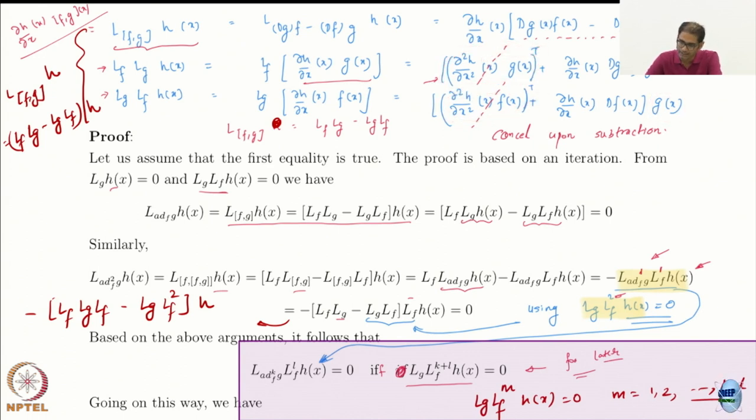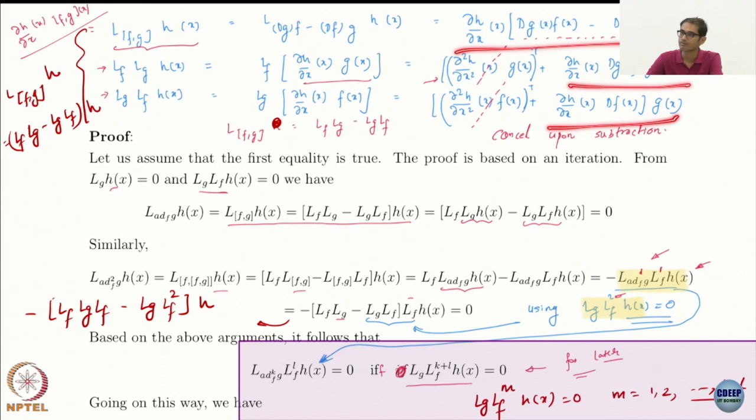Once you have that cancellation, you can see what is left when you subtract the two. Only the remaining terms survive, and that is precisely the expression for L_{[f,g]} h.